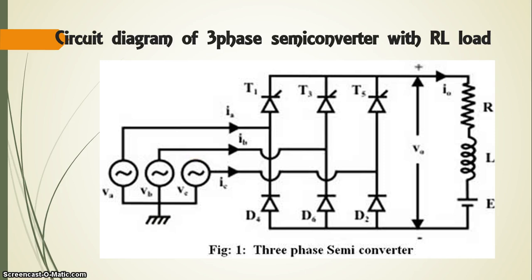Here, the circuit diagram of three-phase semi-converter with RL load is shown. Here, we use three thyristors. Instead of three thyristors in the bottom group, we use three diodes here.